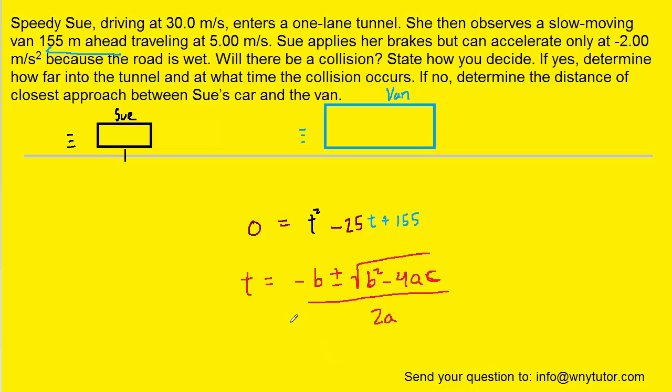And so now we have to use the quadratic formula to solve this for t. And of course, the quadratic formula is right here on the screen. You might want to pause this and just refresh your memory on it. In our case, notice that the A is going to be a positive 1. The B is going to be a negative 25. And then the C is going to be a positive 155. So we'll go ahead and plug into the formula.